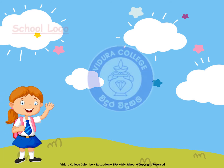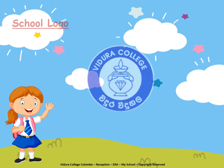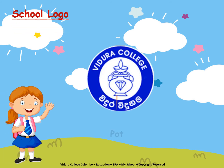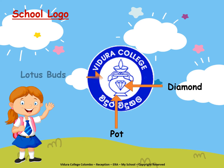This is our school logo. On the school logo, there is a pot. On that pot, we can see a diamond, two lotus buds, and a lamp with flame.